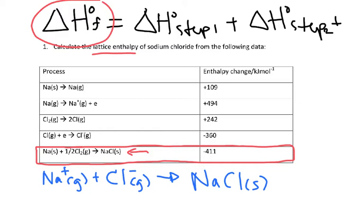The only reason I'm writing this reaction down is because it's going to help me look at this reaction and make sure that I have all of the steps completed and I'm not needing to multiply or flip anything. So this first step here, sodium solid to sodium gas, this looks like it's written in the correct direction